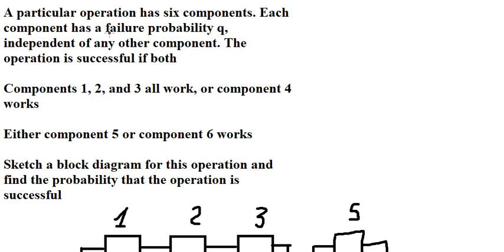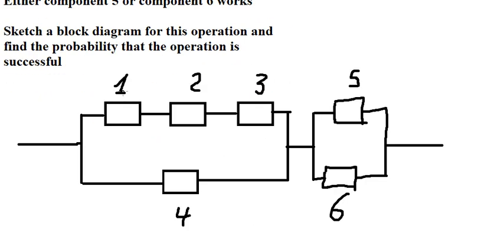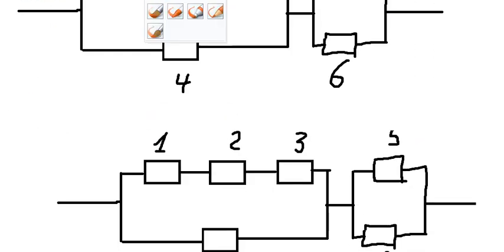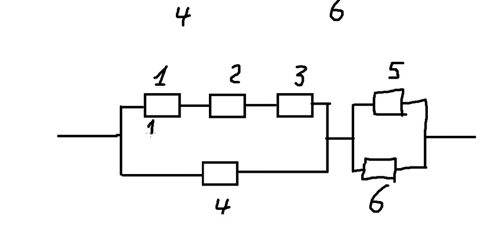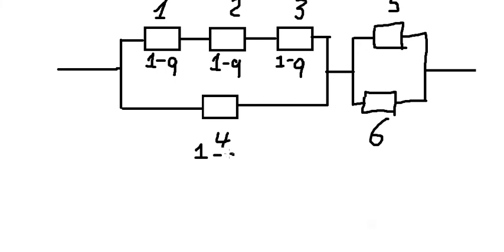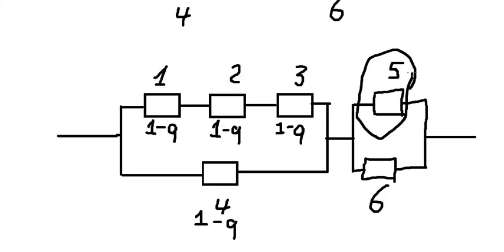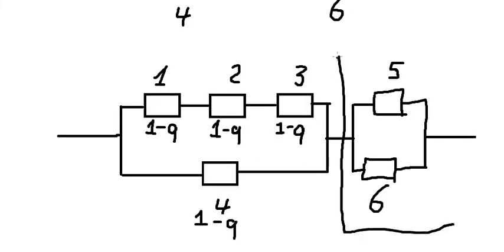We know that q is the failure probability. So the probability of success for components 1, 2, and 3 is (1-q) each. For the parallel group B5,6, if one fails the other can work, or both can be successful. So I will call this group B5,6.